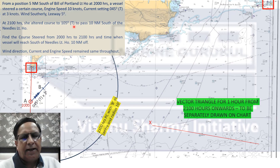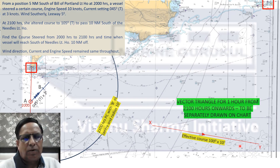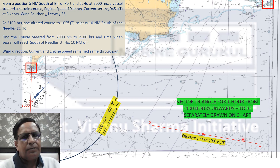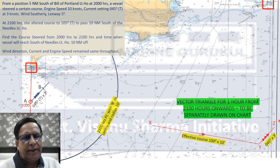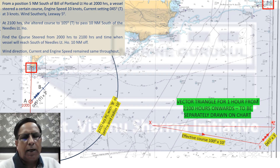At point X we draw the effective course and engine distance for one hour — effective course 100° true at 10 miles — to reach point Y. At Y we allow the current, which sets 045° true at three miles (the drift in one hour), giving us point Z.